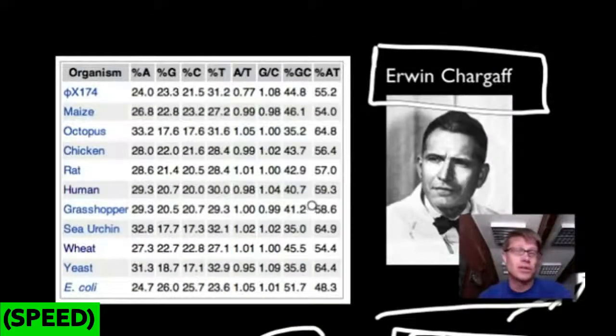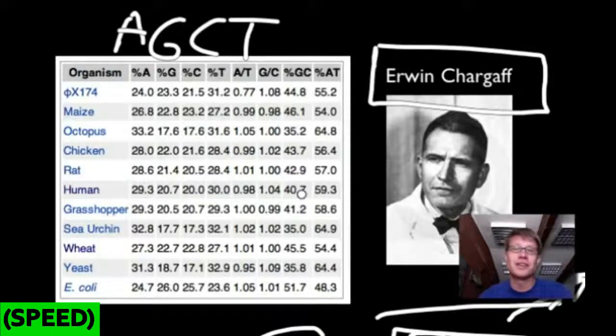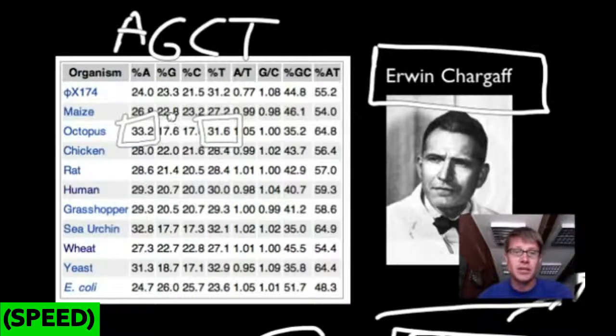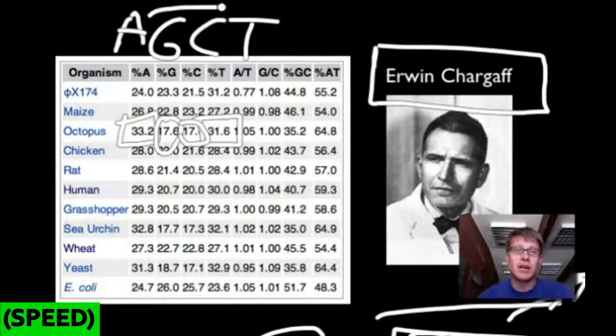Next we got Erwin Chargaff. Erwin Chargaff was looking at different organisms and studying the amount of A's, T's, C's, and G's. And so A, G, C, and T are the four different bases that are found in DNA. And he found something unique. If you look at, for example, an octopus, the amount of A, 33.2, and the amount of T is exactly the same, about the same. And if you look at the amount of G, 17.6, and 17.1, that's about the same as well. In other words, the amount of A and the amount of T is always the same, and the amount of G and the amount of C is always the same. We sometimes call this Chargaff's rule. So as you look all the way down here, like in humans, we have 29.3% A and 30% T. Likewise, we have 20% G and C.